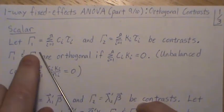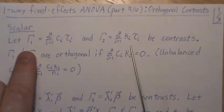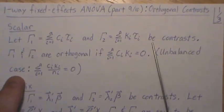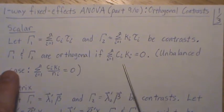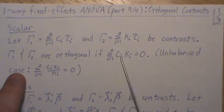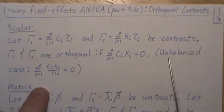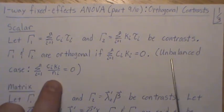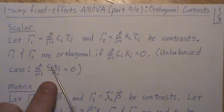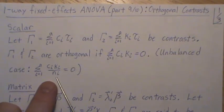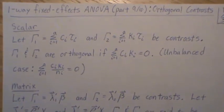In scalar form, two contrasts gamma one and gamma two are orthogonal if the sum of the product of their coefficients is zero. In the unbalanced case we factor in the unequal sample sizes, so we divide each of these products by n_i, the sample size, and that sum must equal zero.